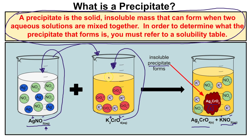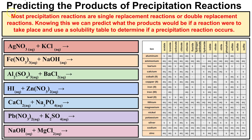Now let's take a look at how we can predict the products of precipitation reactions using a solubility table. The first thing to know is that most precipitation reactions look like either double replacement or single replacement reactions — we covered these types in an earlier video. For now, understand that precipitation reactions have a tendency to look like single replacement or double replacement reactions.